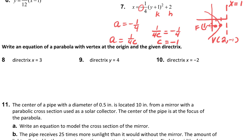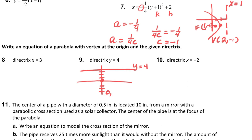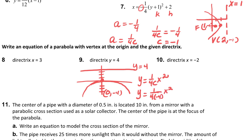Write an equation of a parabola with the vertex at the origin and the given directrix. So number nine, I'm going to sketch it. I know the directrix is y equals four — one, two, three, four. I know my focus has to be four units away from the vertex, since it's four units away from the directrix. So the focus is going to be zero, negative four. The equation is y equals one over four c times x squared, so y equals one over four times negative four, x squared. My equation is y equals negative one over sixteen x squared.